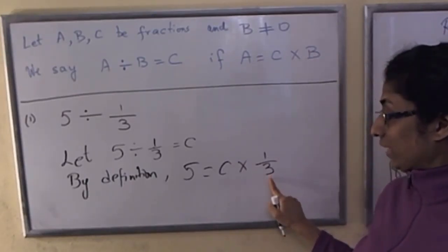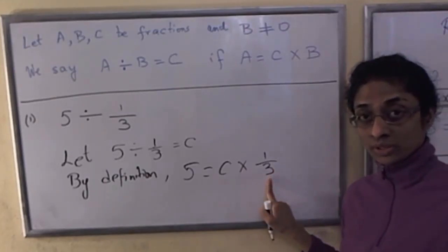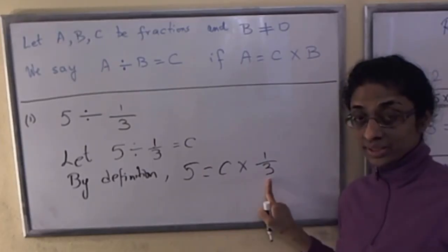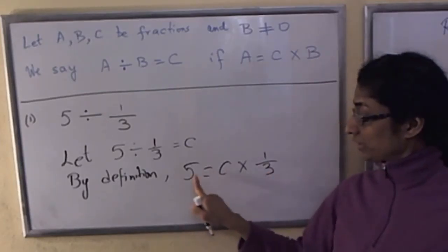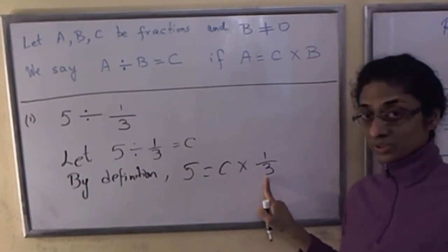We do know on the number line, 3 copies of 1 third is 1. And we would like to get 5. So 3 copies of 1 third give you 1.